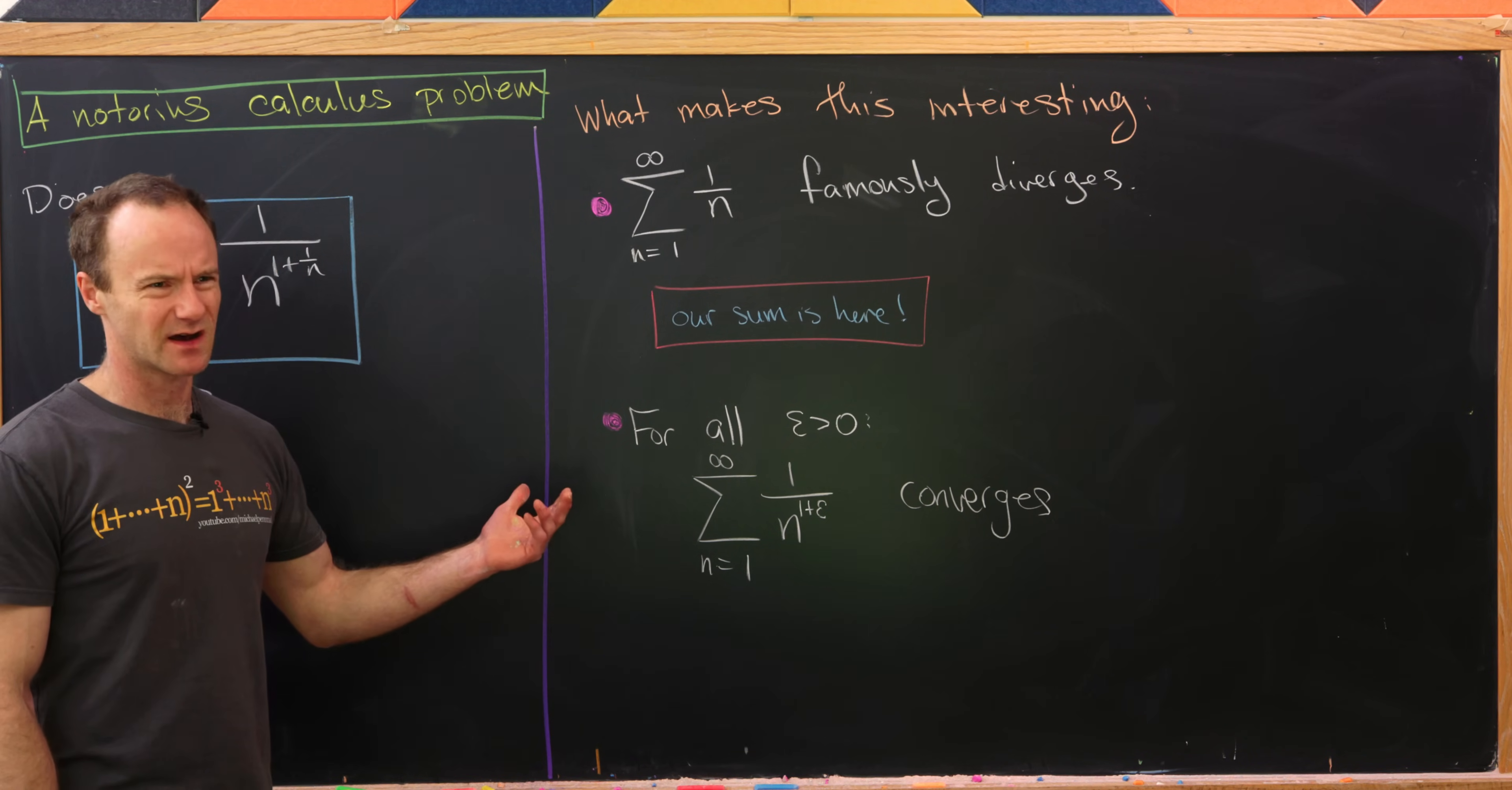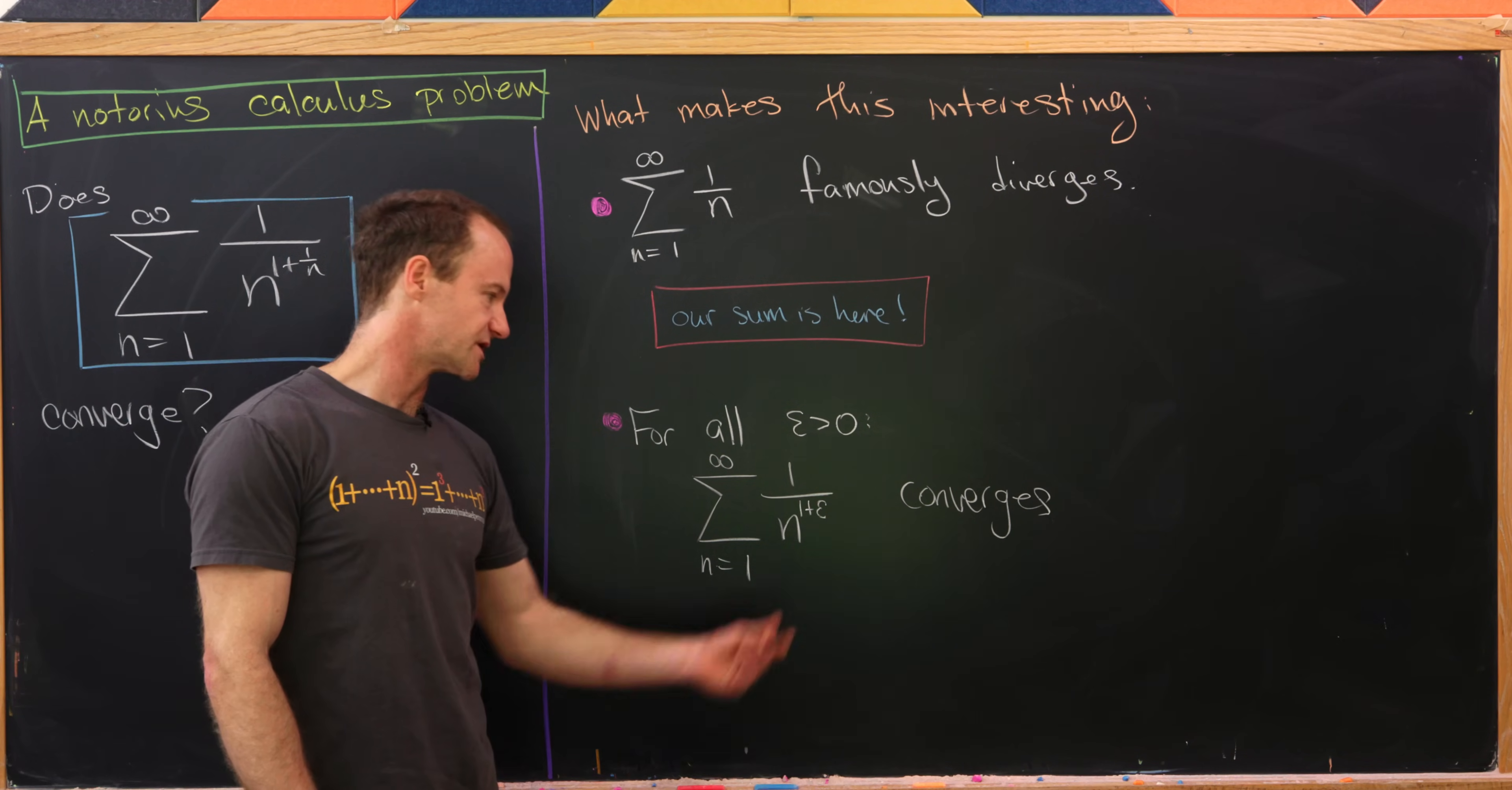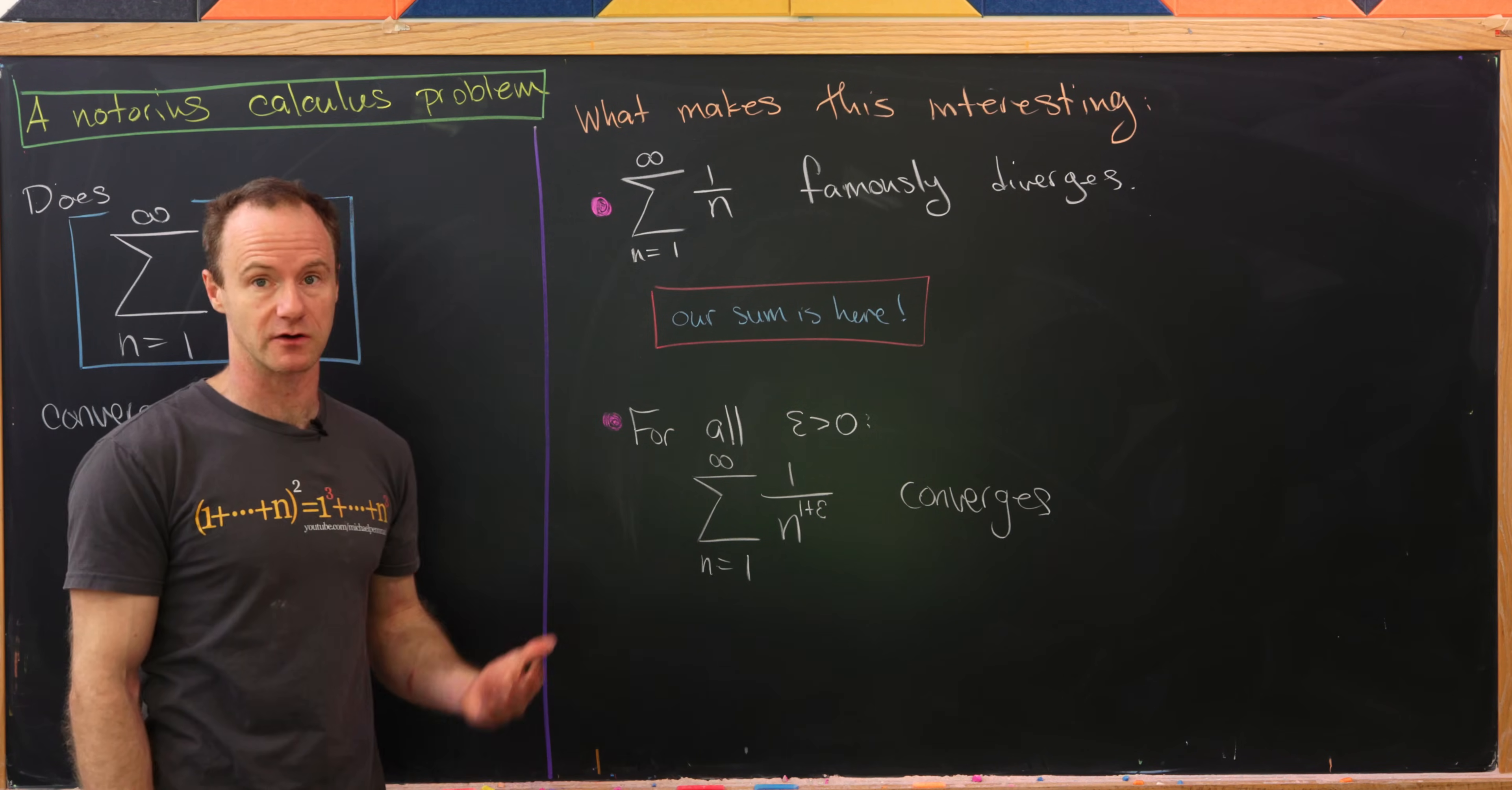But then a version of the p-series test can be written as follows. For every positive number epsilon, the sum as n goes from 1 to infinity of 1/n^(1+ε) converges. So in other words, if this exponent right here is fixed at some number which is bigger than 1, strictly bigger than 1, we have convergence. But the important thing is that this is fixed at something bigger than 1.